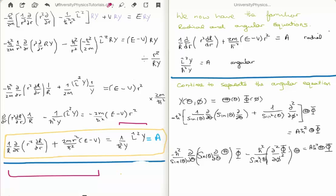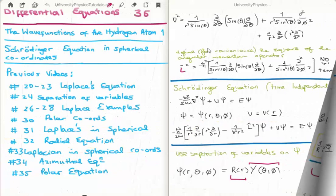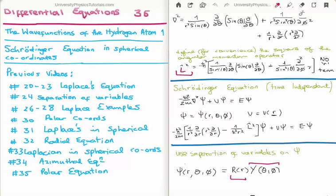At the moment it looks like the radial equation is much more complex than the angular equation. But the angular equation has this L squared operator, so in actual fact it is equally as complex, perhaps more complex.